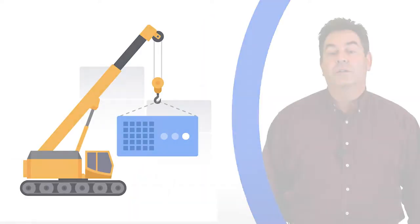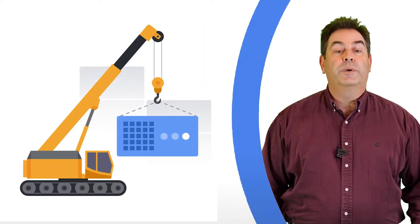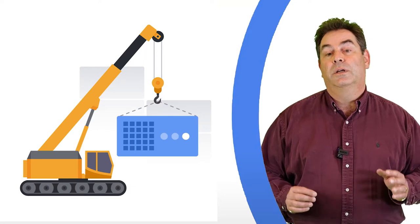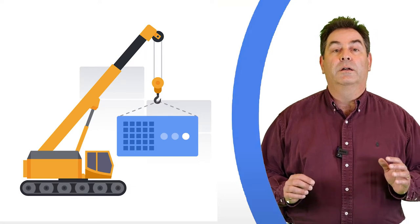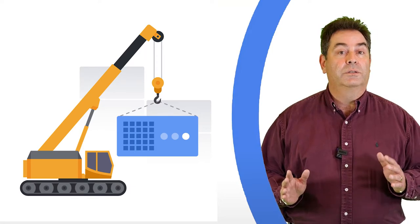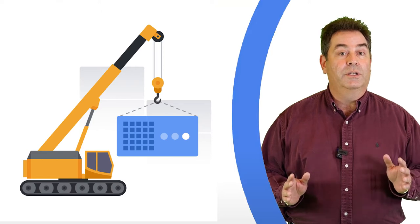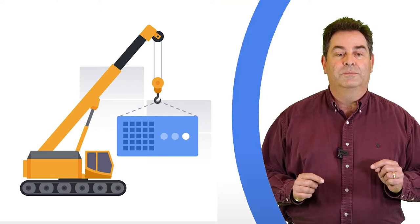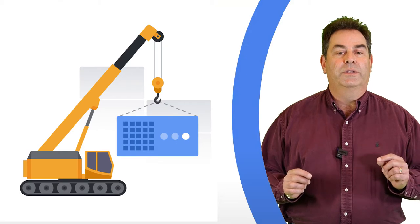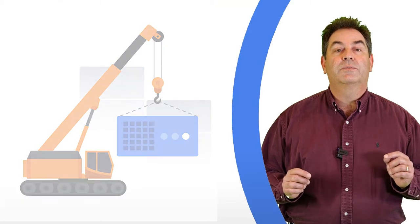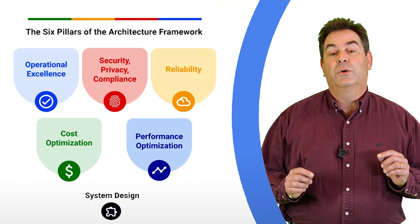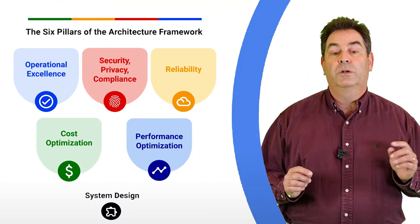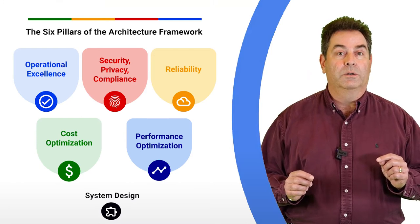The Google Cloud Architecture Framework is a set of canonical best practices to help you design, build, and operate a cloud environment that is secure, efficient, resilient, high performing, and cost effective. The framework is broken down into six different pillars, with each pillar focused on a specific topic or function critical to designing and operating your workloads.